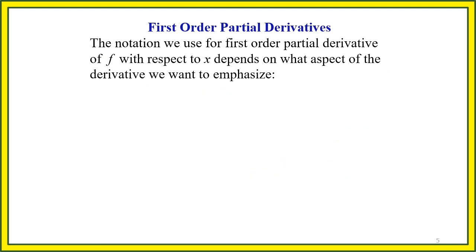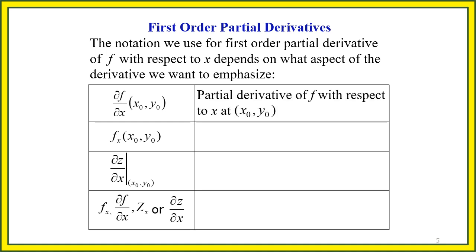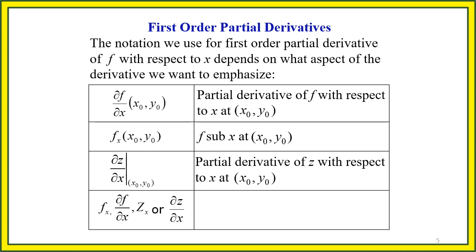The notation for the first order partial derivative of f with respect to x depends on what aspect of the derivative you want to emphasize. If we evaluate at a point (x₀, y₀), we substitute the values of x₀ and y₀ into the result — this is the same as f_x(x₀, y₀). The function can also be represented in terms of z, with all notations referring to differentiation with respect to x.